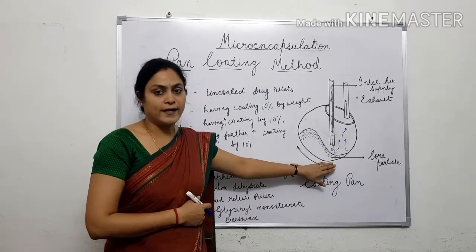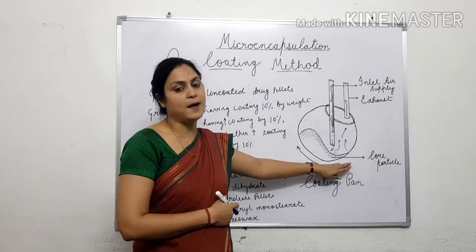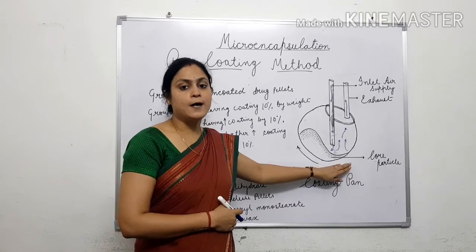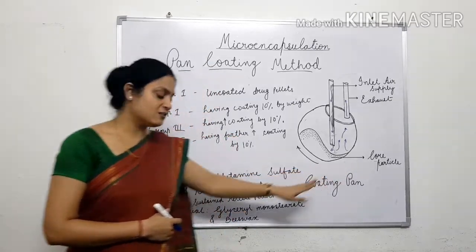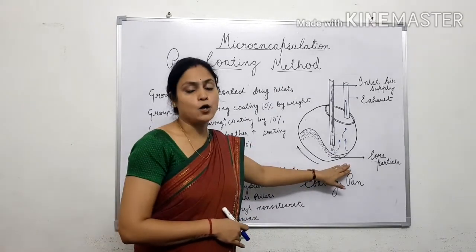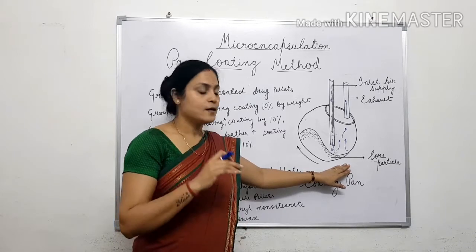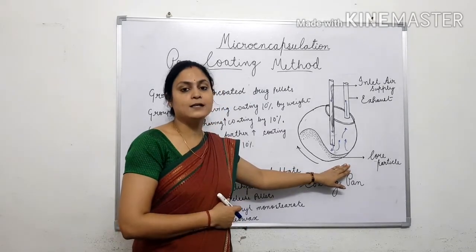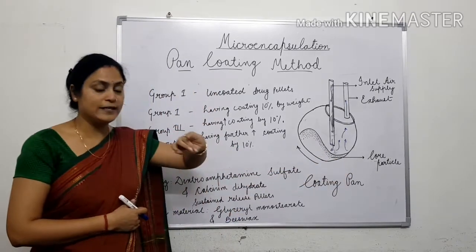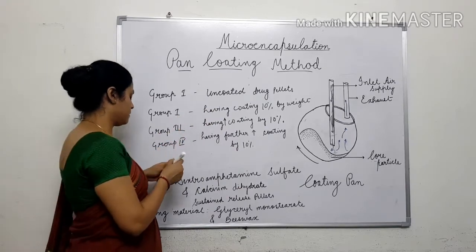At this point, when all these three-fourths — that is 75 grams of pellets — are uniformly coated with the combination of beeswax and glyceryl monostearate, again one-third of these coated pellets — that is 25 grams — is taken out, which constitutes Group 2. Group 1 has drug-containing pellets that are uncoated with any polymer coating material. Group 2 has pellets with a single layer of the polymer material over them.